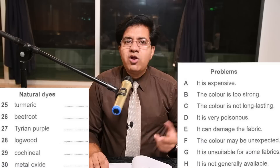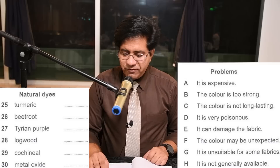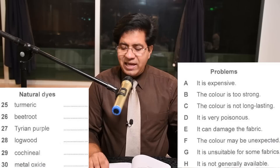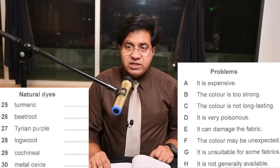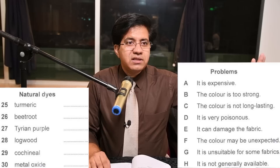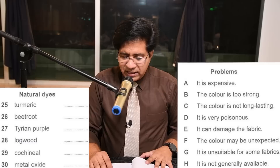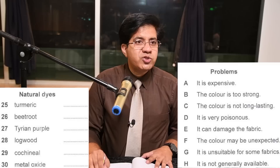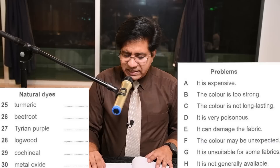Option C: color is not long lasting — they may use 'not permanent,' 'does not last a long time,' 'vanishes quickly,' or 'lasts for a short time.' Option D: it is very poisonous — they may use 'dangerous' or 'extremely dangerous.' Option E: it can damage the fiber — they might say 'destroy' or 'affect the fiber.'